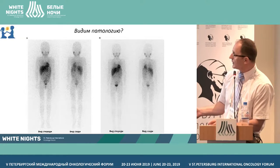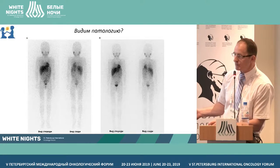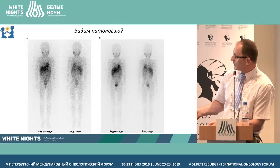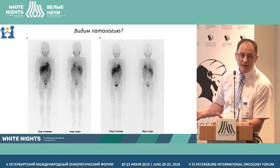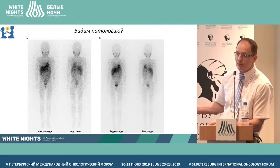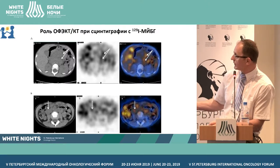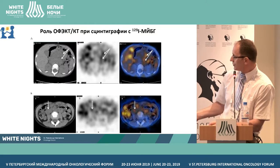I will show you clinical cases and which protocols we use and where. Planar images of two patients — to first view, no pathology — but we know that based on other methods of study, in both cases there were huge tumors in the retroperitoneum that took up MIBG.